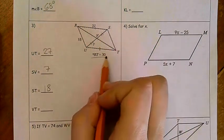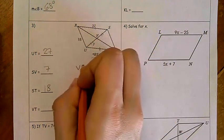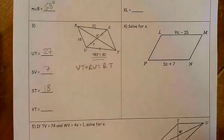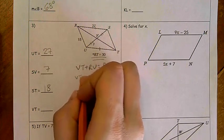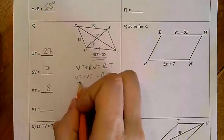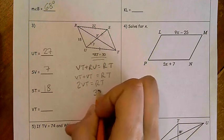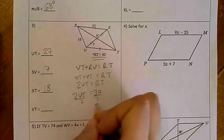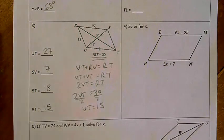And then we are looking for VT. Well, there's a note right here that RT is 30. So VT plus RV is going to equal RT. But we know VT and RV are exactly the same, so VT plus VT, right? They're congruent to each other. So I have 2VT is equal to RT, but RT we said was 30. So that means if I divide both sides by 2, VT must be 15.